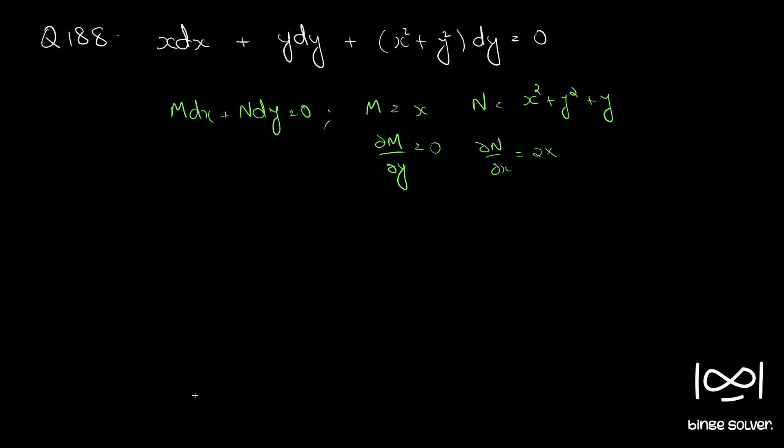Let's see. Here, if you divide throughout by x square plus y square, we will have x dx plus y dy by x square plus y square, dividing by x square plus y square, plus dy equal to 0.